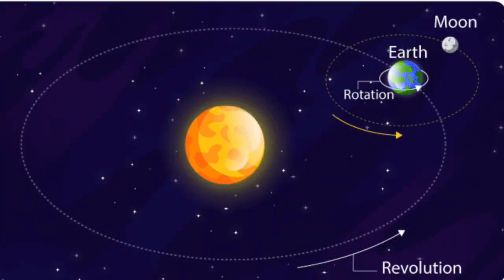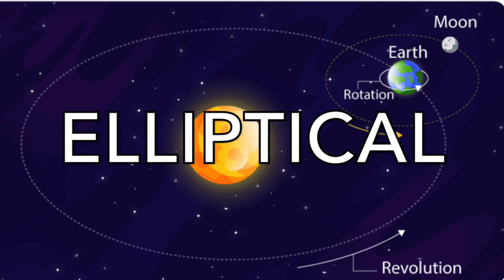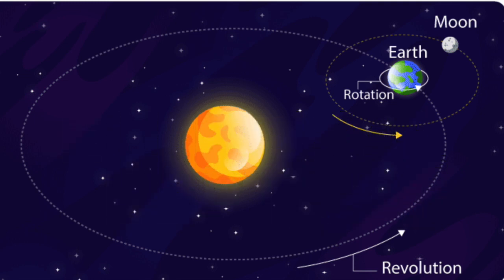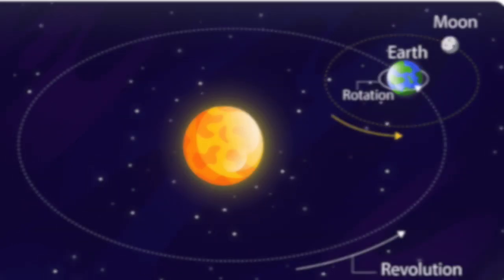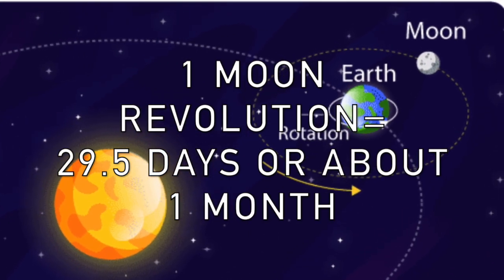Here's a diagram to illustrate Earth's two movements. You can see rotation there — Earth spinning on its axis — that takes one day or 24 hours. You can also see that orbital path where the Earth is going around the sun; that's one revolution, or one year. This diagram also shows Earth's orbital path, and we can see it's not a perfect circle — it's kind of an oval shape, and we call that elliptical. We also know that the moon revolves or goes around the Earth, and that movement takes 29 and a half days, or about a month.